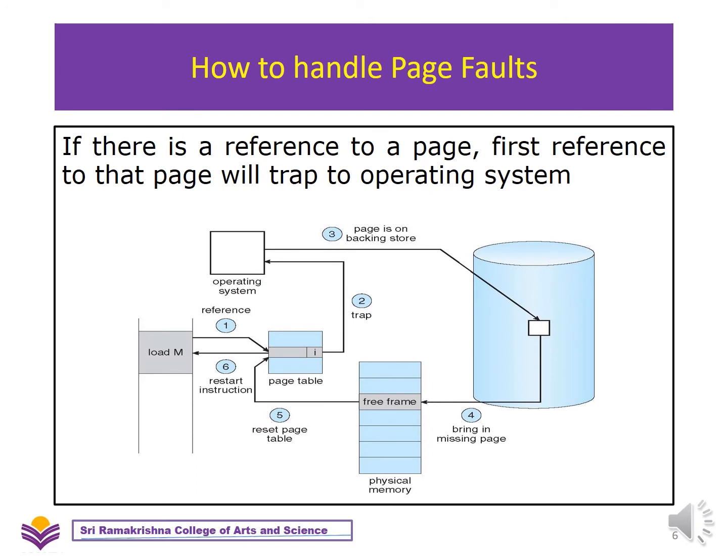If there is a reference to a particular page and that page is not available in memory, a trap will be sent to the operating system — that is what is known as a page fault. To handle the page fault, we have given a diagram. In the memory, you have an instruction known as LOAD M. That particular page should be available in the primary memory.